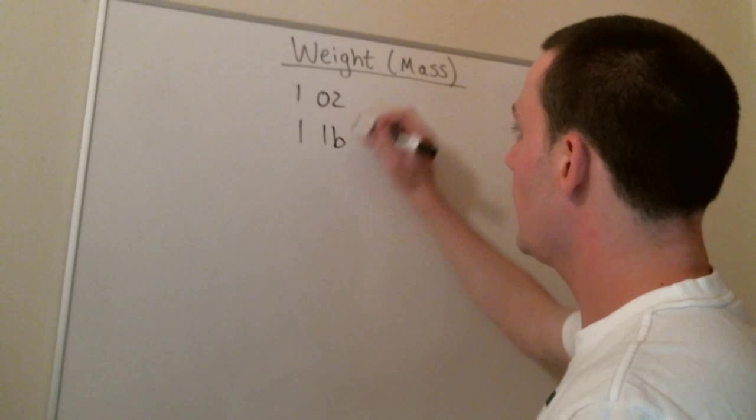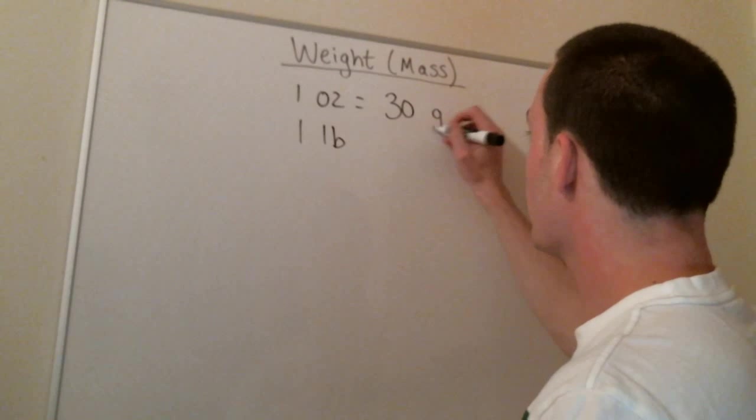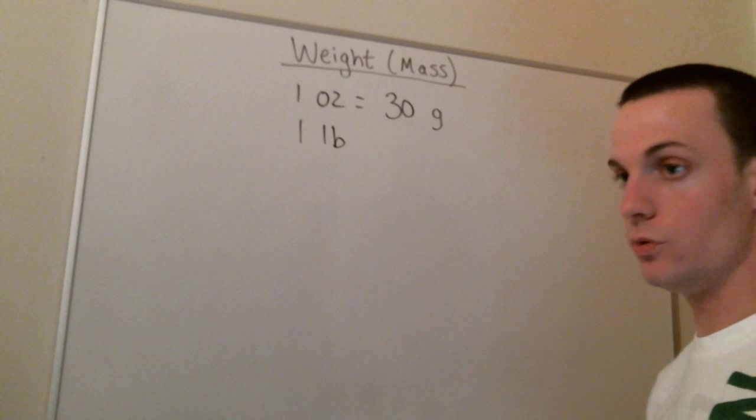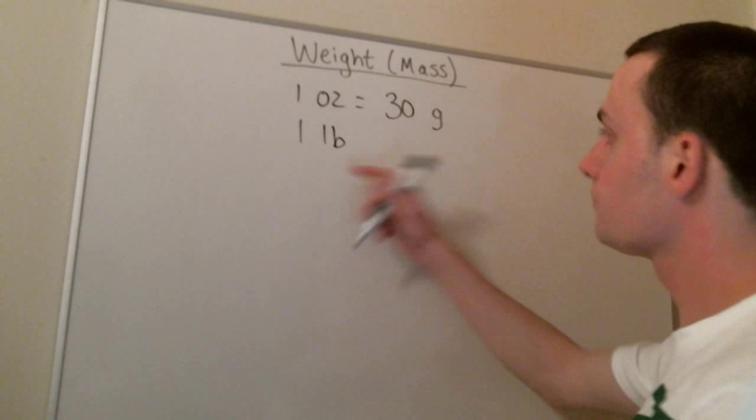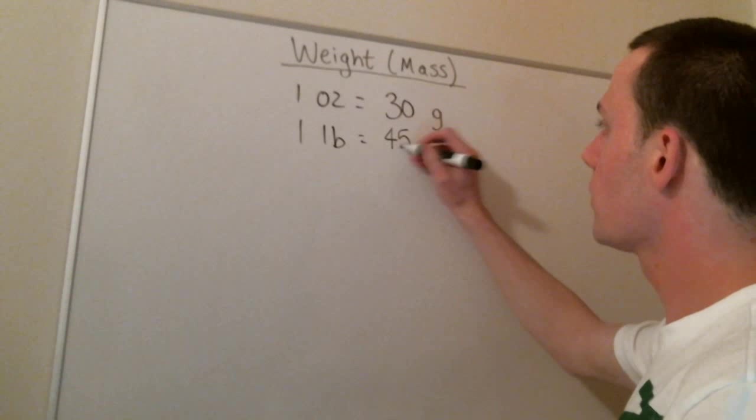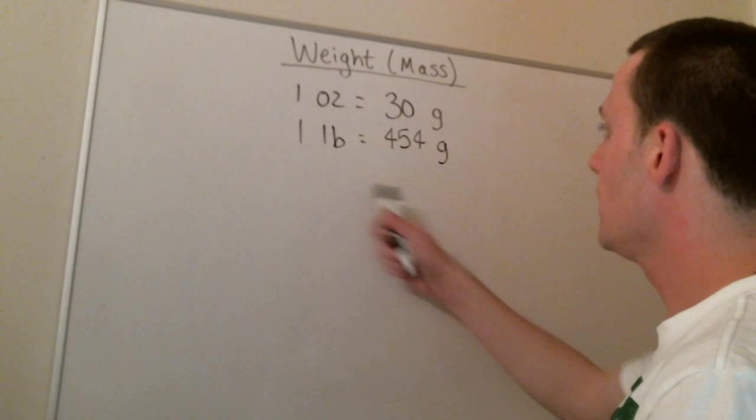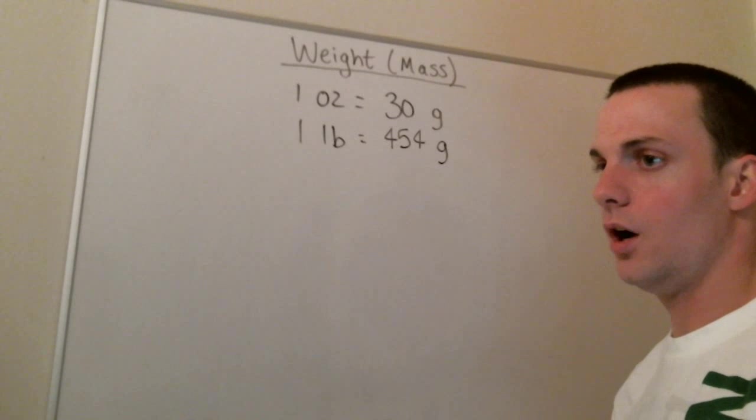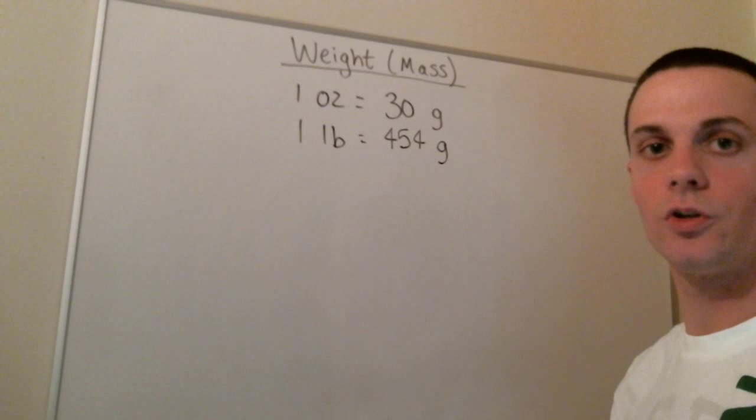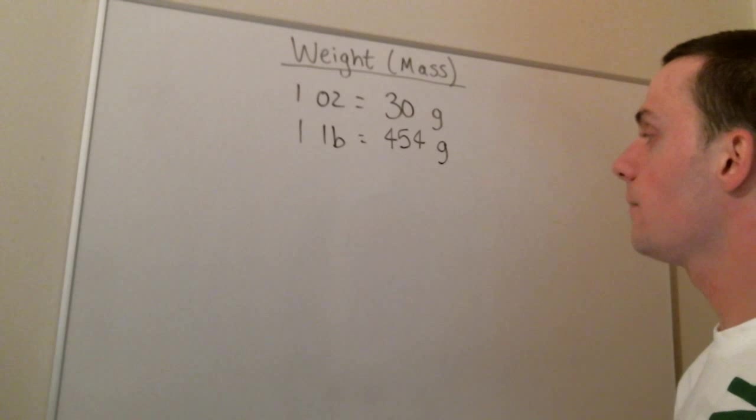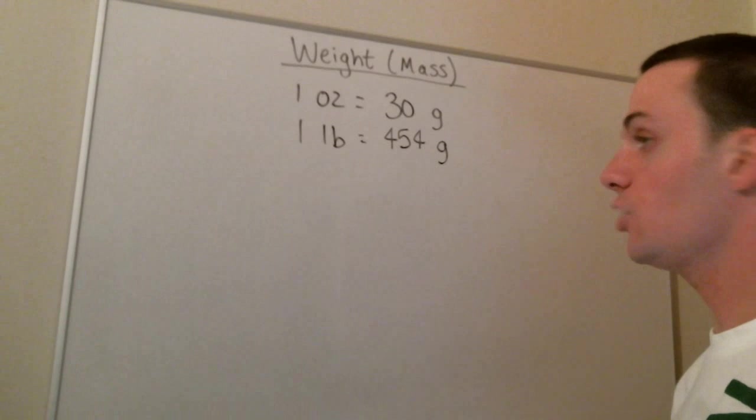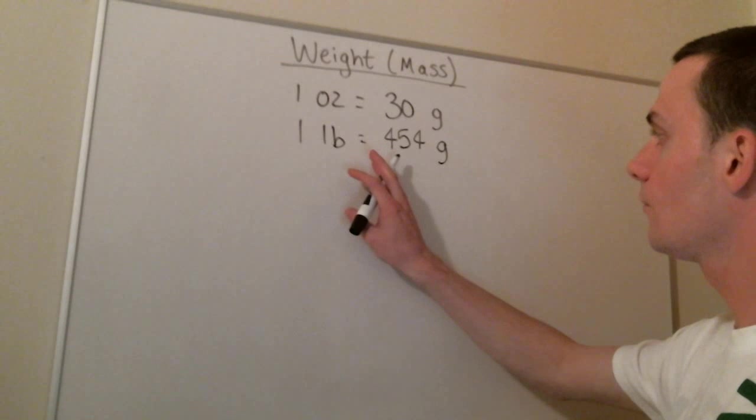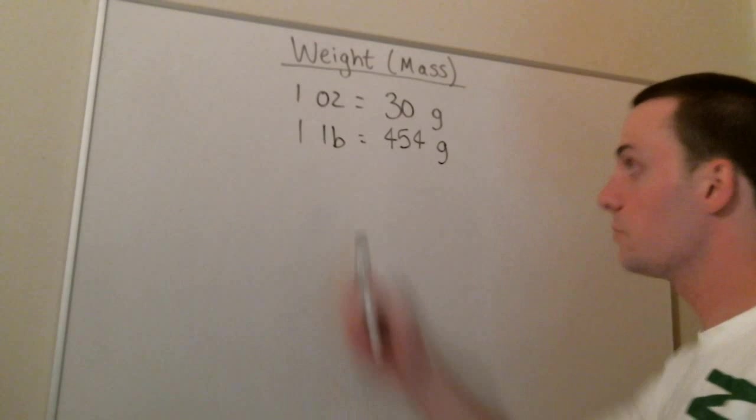So in the United States, we measure weight using ounces and pounds. So one ounce is about equal to 30 grams. It's a little less than 30 grams, but it's a good approximation that we can use in the community setting. One pound is equal to 454 grams. The situation in which you would see a pound of a medication dispensed is in creams and ointments. Sometimes we'll use a pound tub of, say, triamcinolone or silvadene in the community setting. We'll dispense a pound at a time.